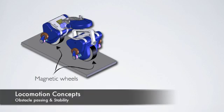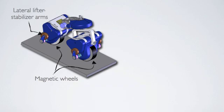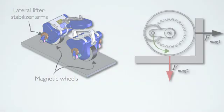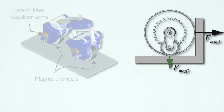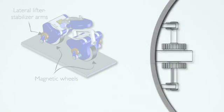The locomotion concept consists of two magnetic wheels with integrated lateral lever arms. These arms are first used to slightly lift off the magnetic wheel, but also to laterally stabilize the robot.